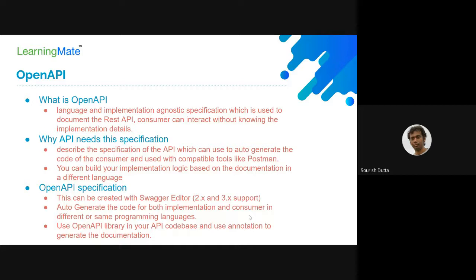You can always describe that API using OpenAPI or Swagger — it's language and implementation agnostic. OpenAPI can be used by the consumer, meaning the service or client consuming the API, to understand what operations are supported, what the request/response objects are, whether the endpoints are secured, and how to interact with the API without knowing the actual implementation detail. It's a specification for defining documentation of any REST API.